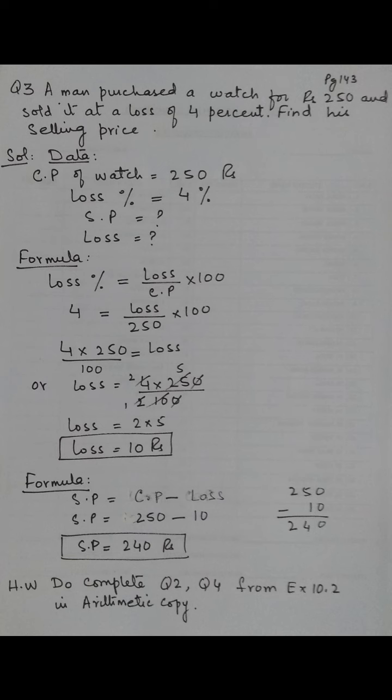The formula is loss percent is equal to loss upon CP multiplied by 100, because here a loss has occurred. He sold the watch for 250 rupees and then had a 4% loss. We need to find the selling price in rupees.